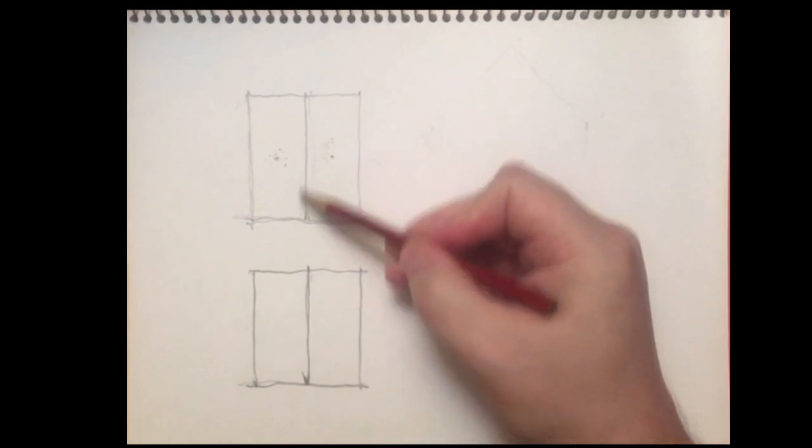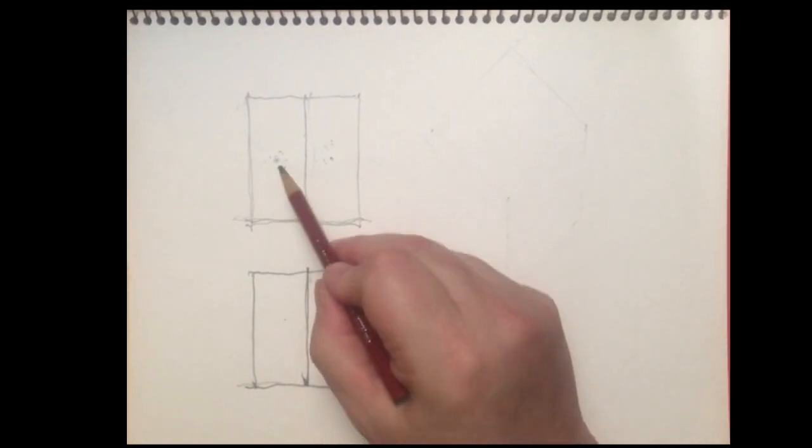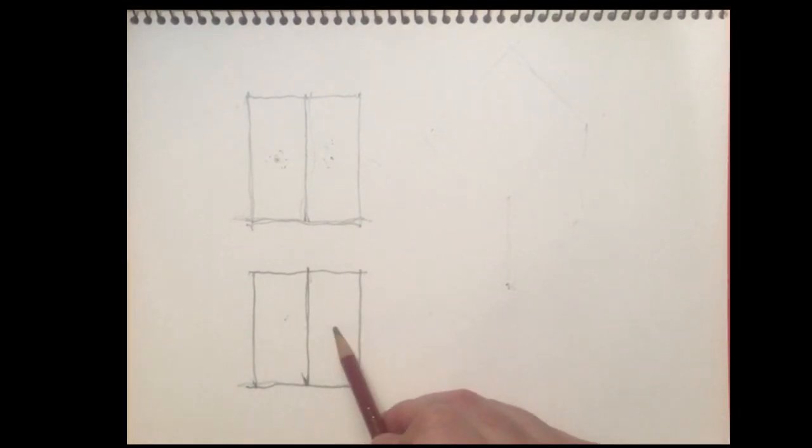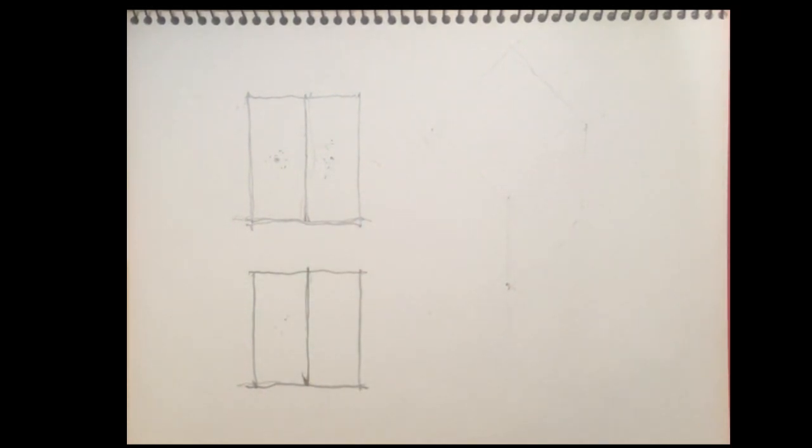So we have a top view and a front view, and it shows us two different surfaces. But we don't know what is different about those surfaces, what the relationship is.